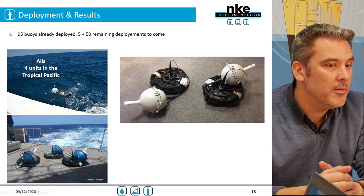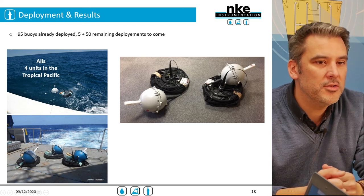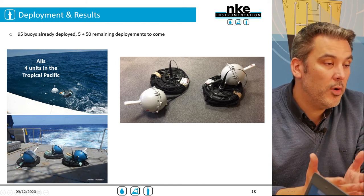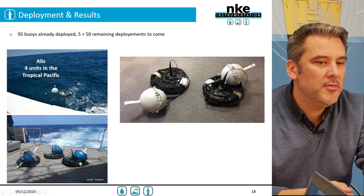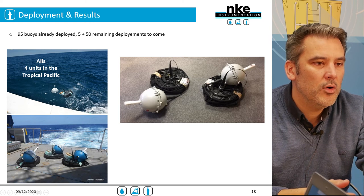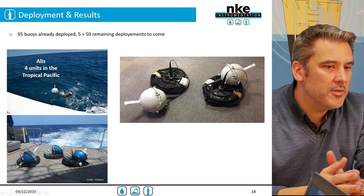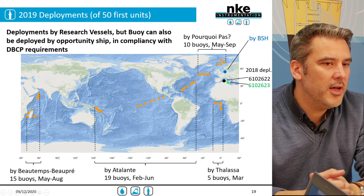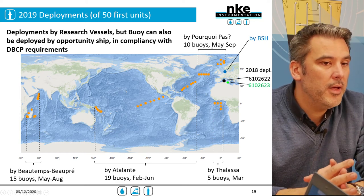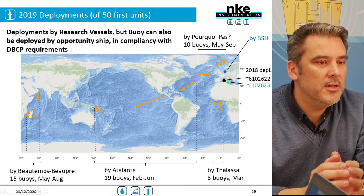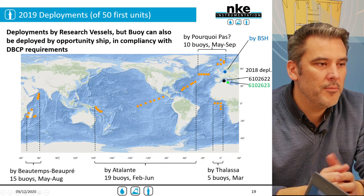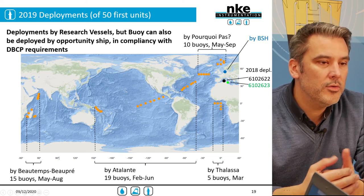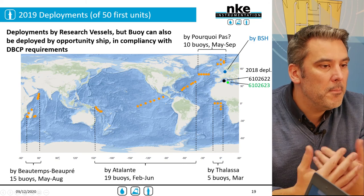Once buoys have been manufactured, with sensor calibration and buoy verification completed, today 95 units have already been deployed and the remaining 55 buoys will be deployed in 2021. A focus on the deployments made in 2019 shows these were mainly made from vessels, but the buoy has been designed to be deployed by non-expert vessels, as recommended by the DBCP program — for example, using commercial vessels, sailing boats, and many other types of ships.